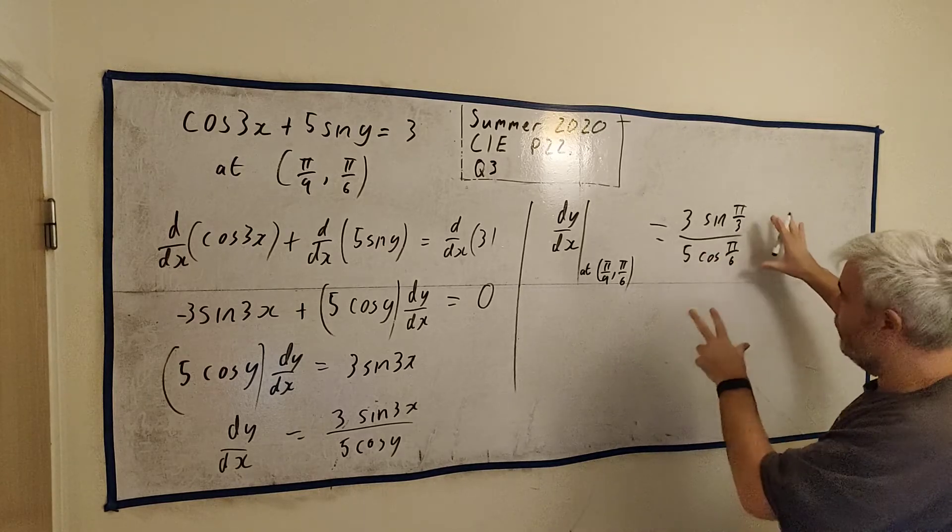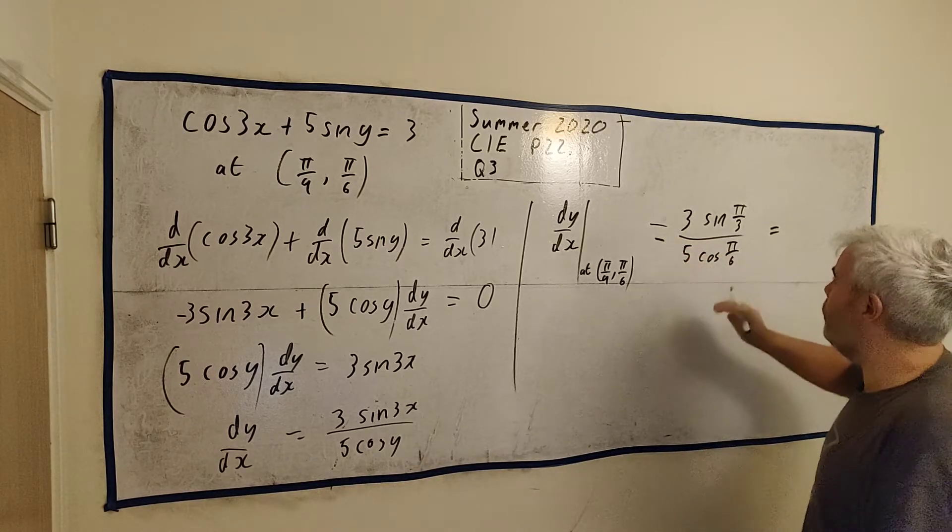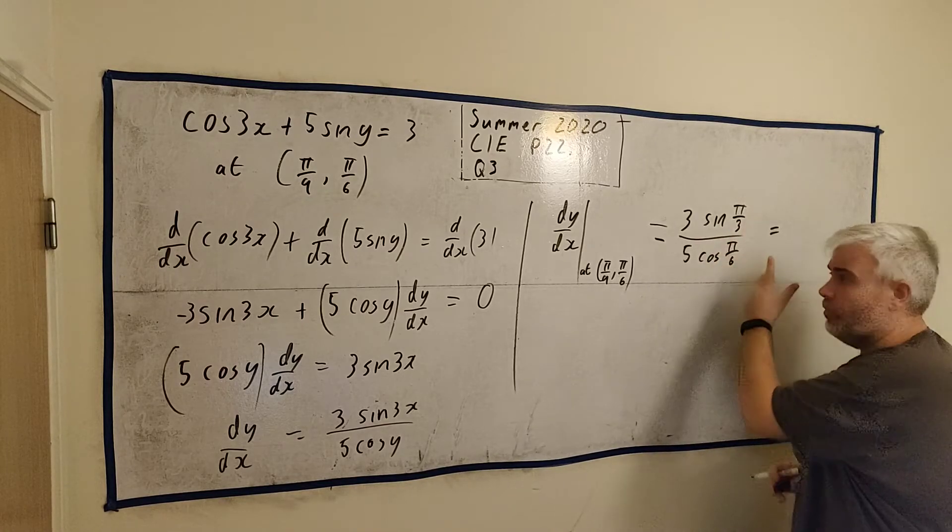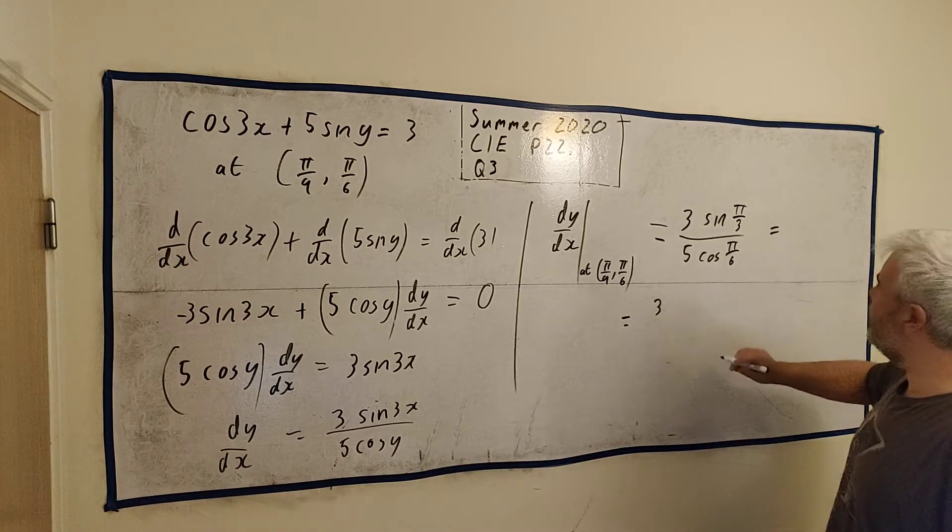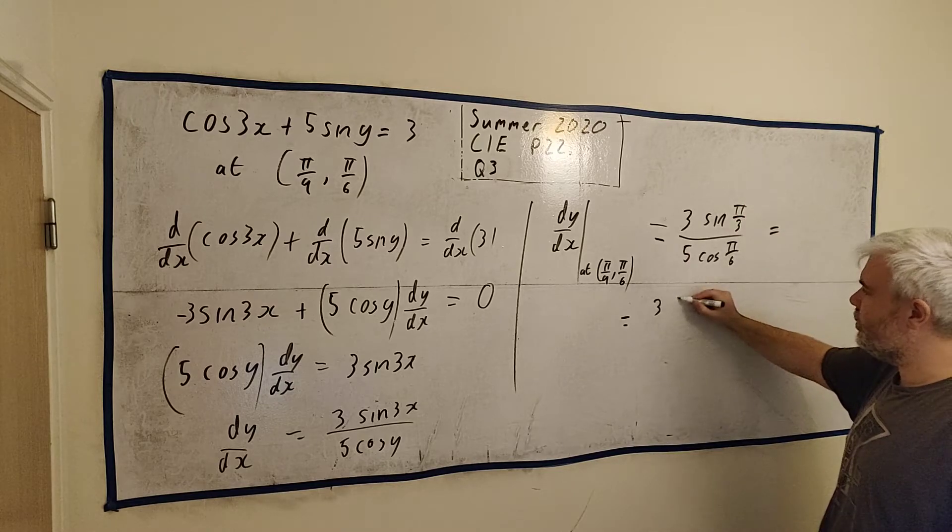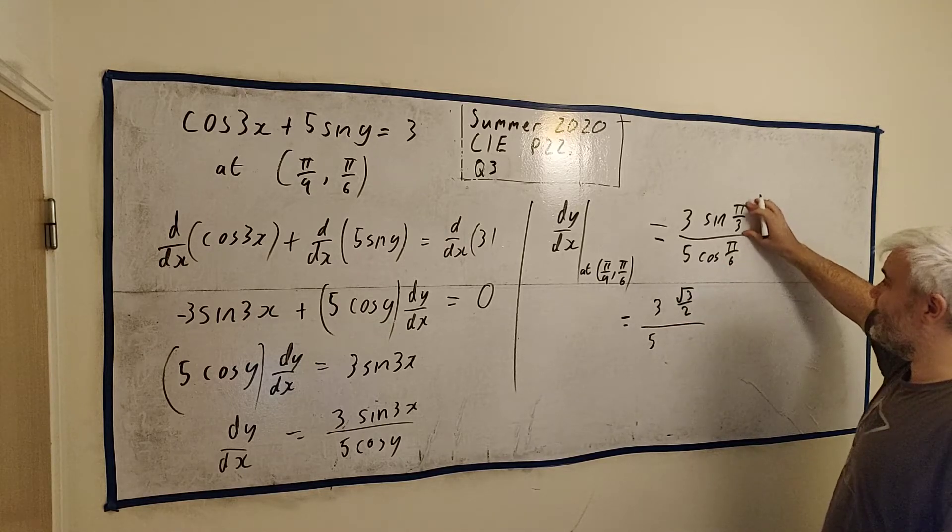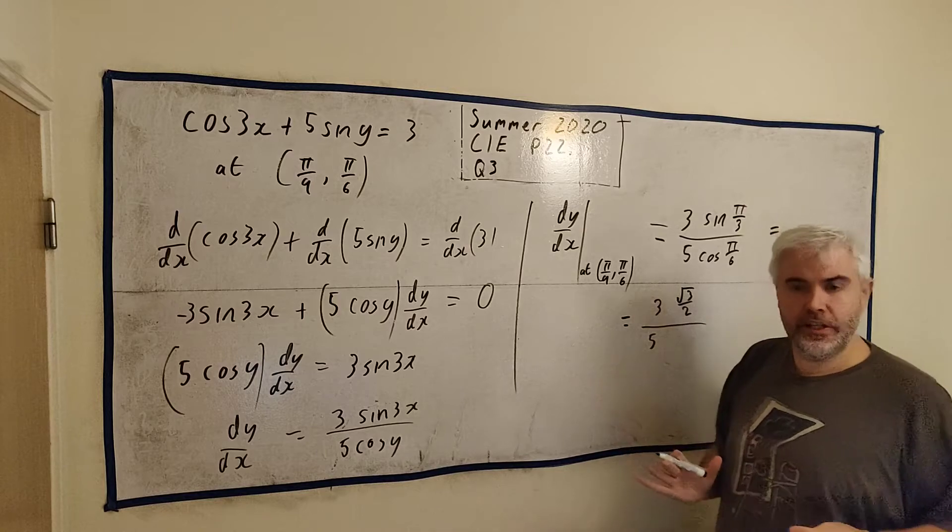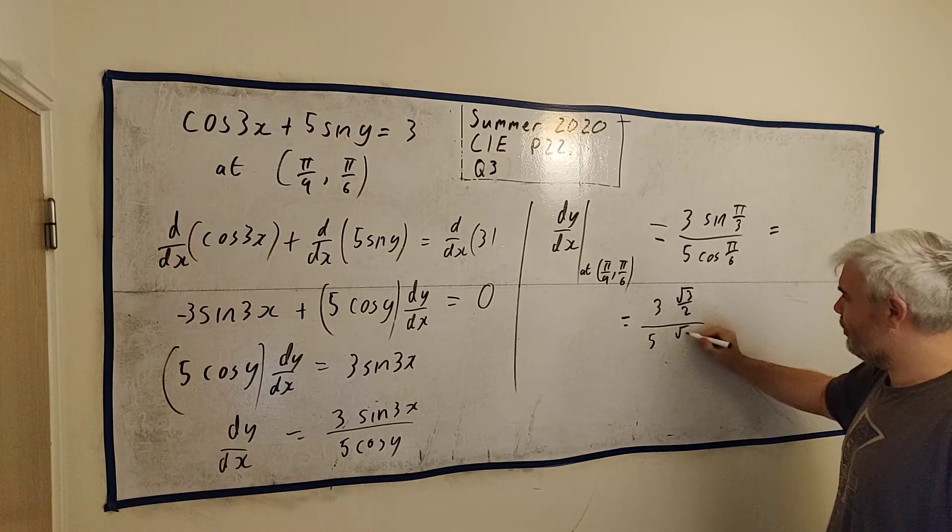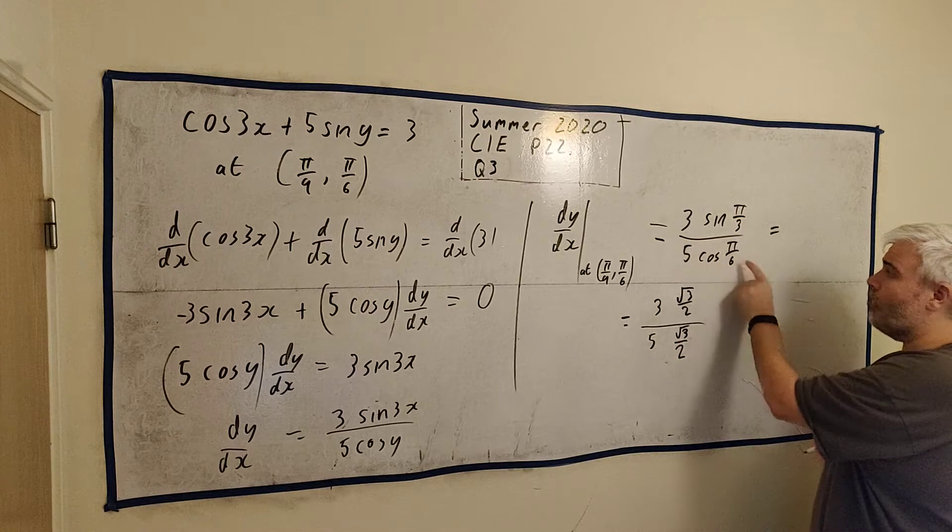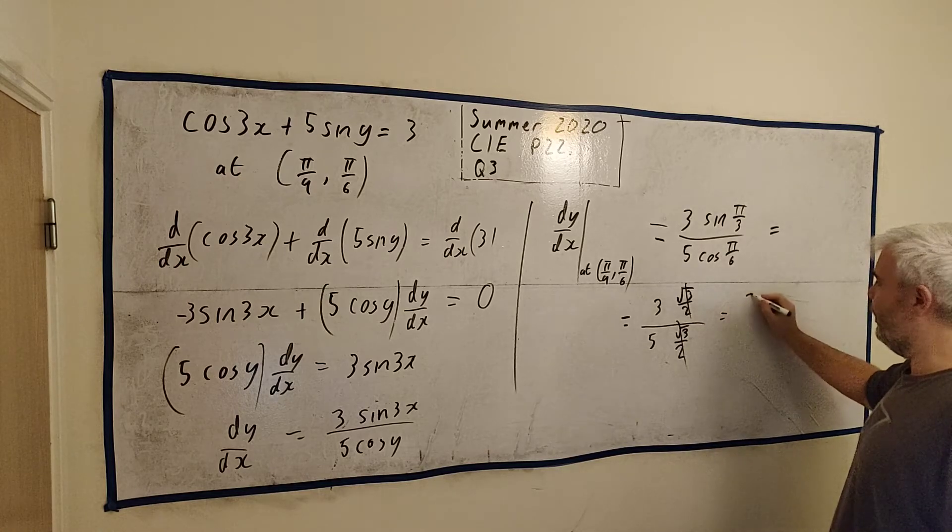Now, a calculator will do that for you. You can just put that into a calculator. You'll get your answer. Or, we're told certain values for sine and cosine, and these are two of the ones we're told. 3 times sine pi over 3 is the square root of 3 over 2. And 5, cosine this, so this is 60 degrees and this is 30 degrees. They're actually symmetrical to each other in sine and cosine. Cosine pi over 6 is the same as sine pi over 3. So they actually cancel and we're left with 3 over 5.